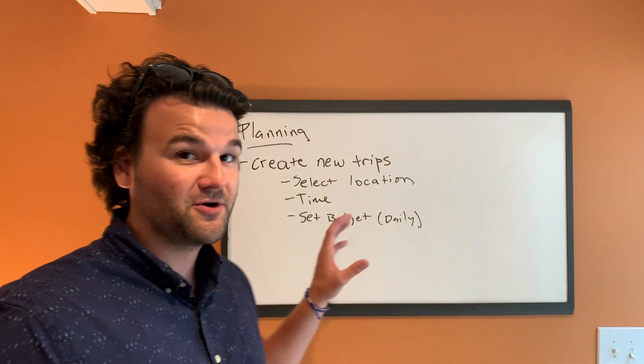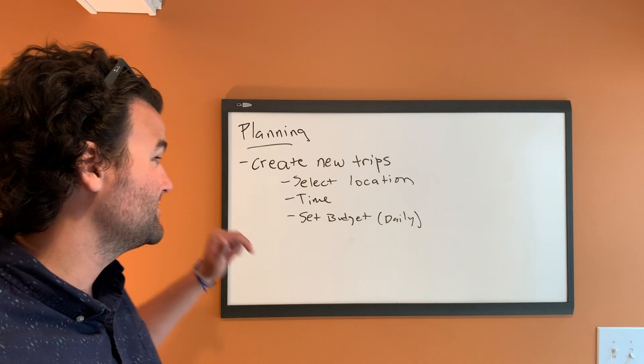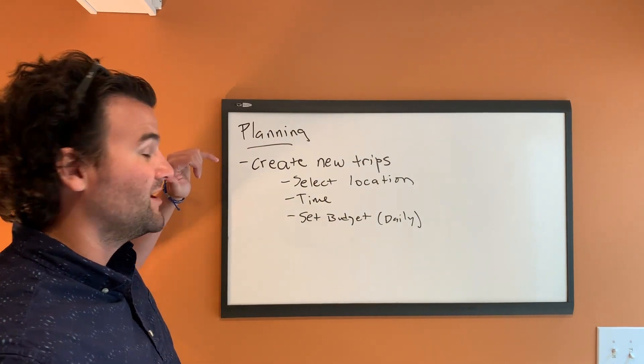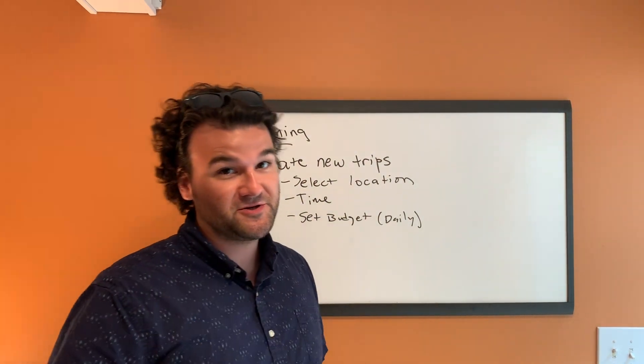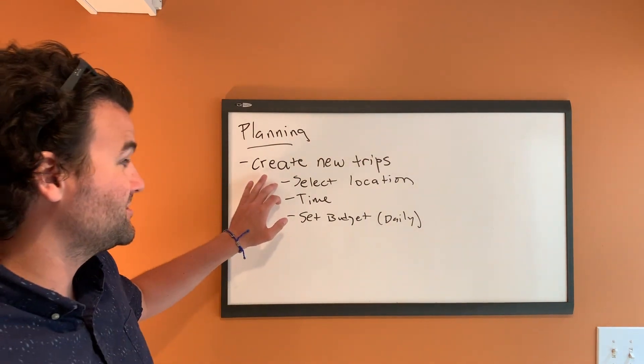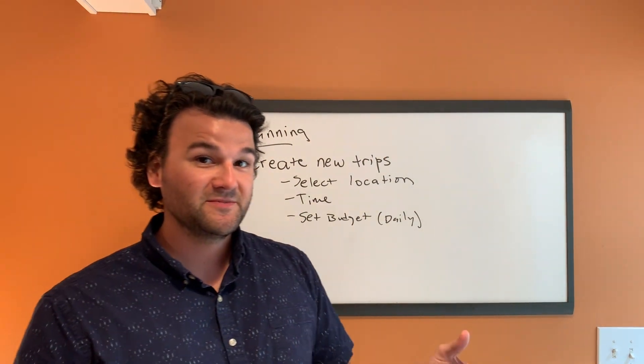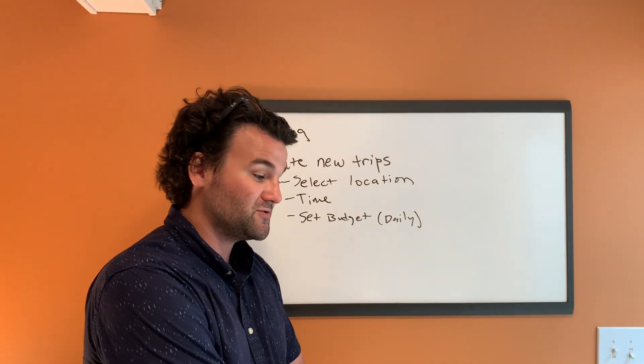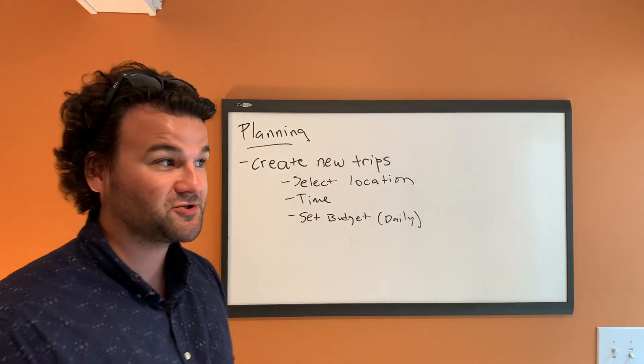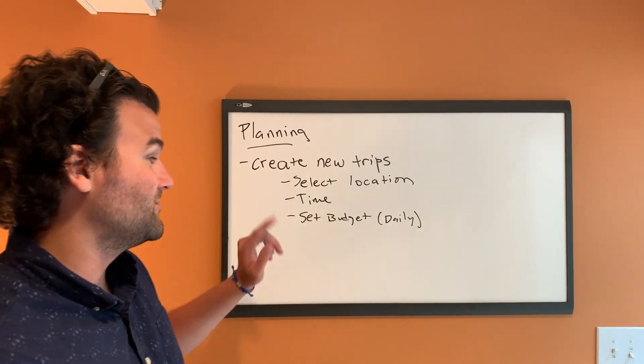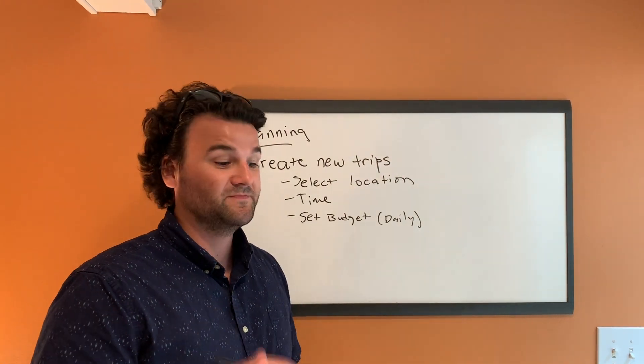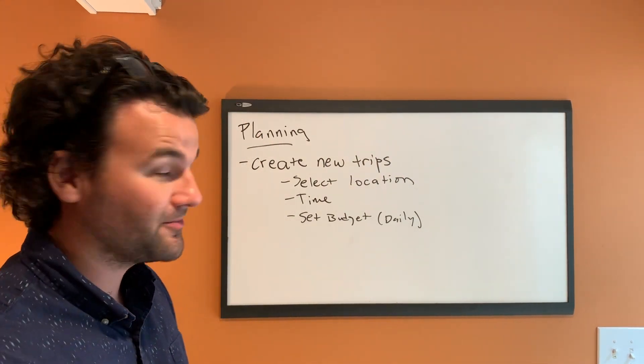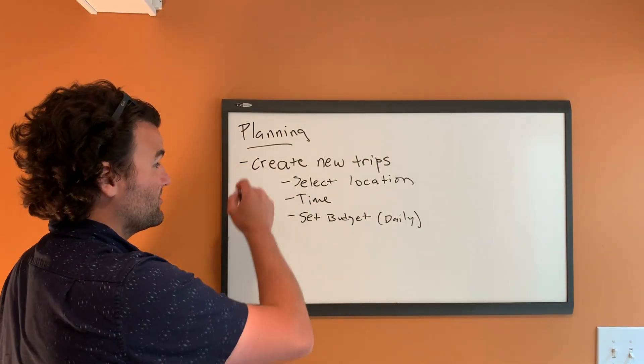This is going to be the core main feature of the app, right? So we're just going to be able to create a new trip and you'll be able to create as many trips as you want, pick the location, set the time. So if you're going to go for a three-day trip, you can do that. You'll be able to say like, I'm going to go from June 30th to July 4th. And then you want to set your budget as well. So you could do $200 a day or whatever you want your budget to be. This is going to be the main core of the app.